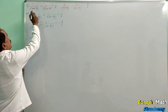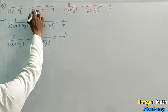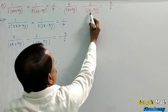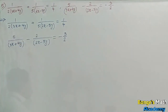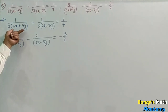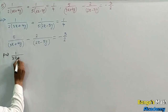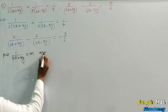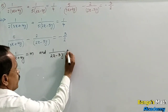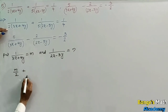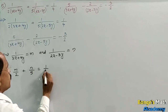Fifth example: 1 upon 2 into bracket 3x plus 4y plus 1 upon 5 into bracket 2x minus 3y is equal to 1 upon 4. Second equation: 5 upon 3x plus 4y minus 2 upon 2x minus 3y is equal to minus 3 upon 2. The denominators are 3x plus 4y and 2x minus 3y. Put 1 upon 3x plus 4y equal to m and 1 upon 2x minus 3y equal to n. Then the equation becomes m upon 2 plus n upon 5 equal to 1 upon 4.